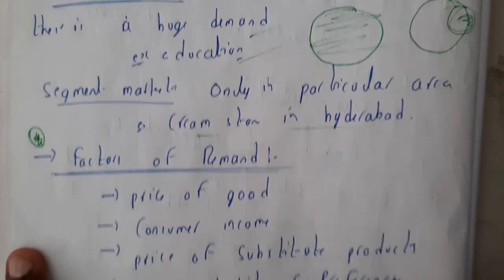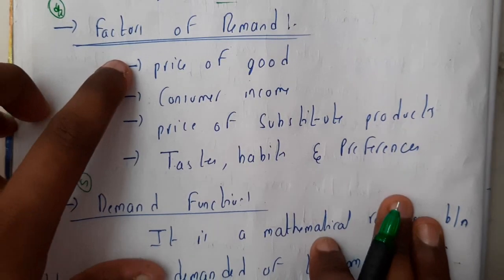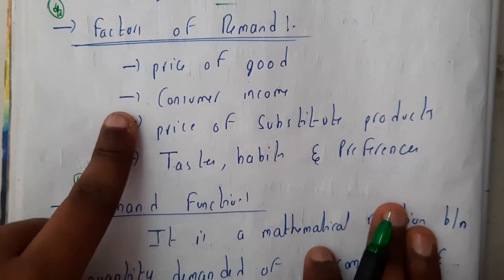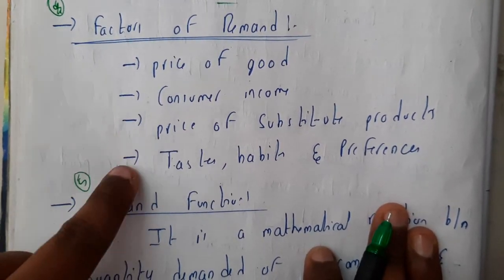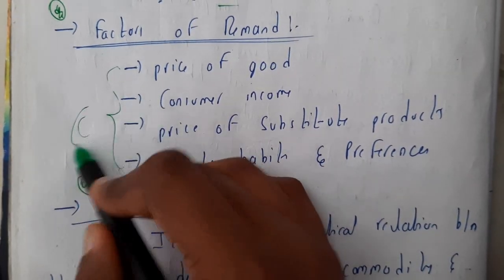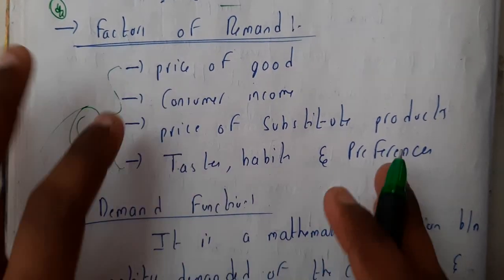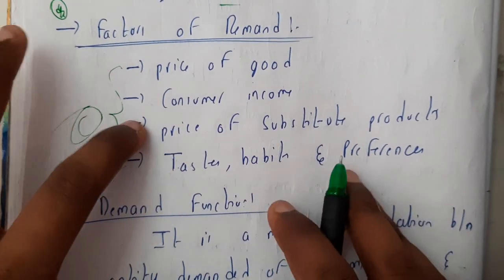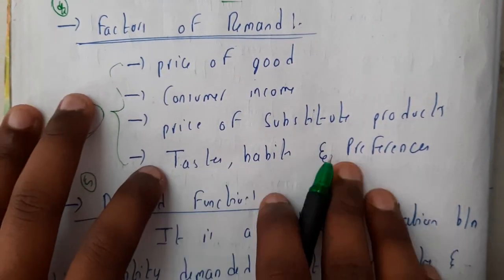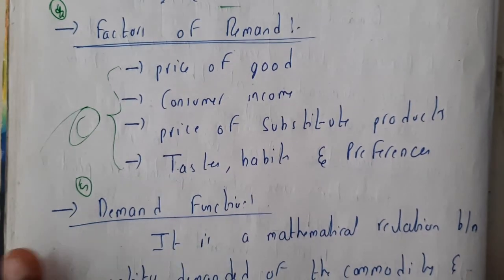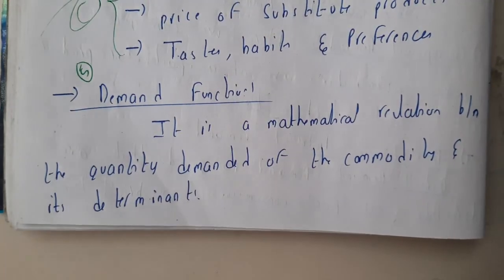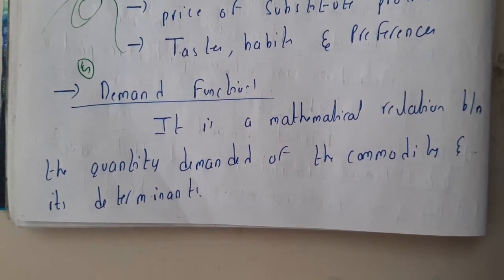Now let us go through some features of demand. The price of goods should be constant, consumer income should be constant, the price of subsidiary products should be constant, and taste and habit should be constant — all these need to be kept constant before analyzing demand. In the next lecture, we will go through the demand function. Thank you for watching.